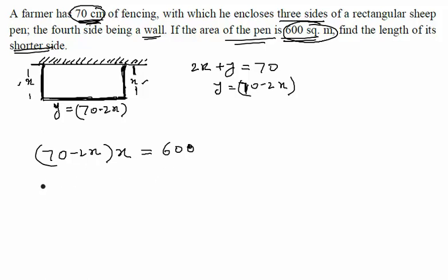Let us try and simplify this equation. It will give you 70x minus 2x square equals 600. If you divide it by 2, you will get 35x minus x square equals 300.